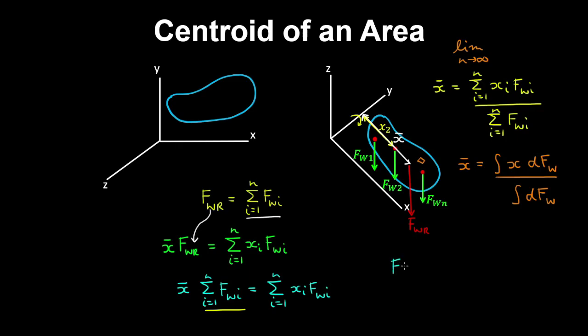Now the force of weight can be written as the density by gravity by the volume of a body. So therefore for a body with a uniform density and a uniform gravitational field acting on it, the force acting on a differential element is ρg by the volume of that element.